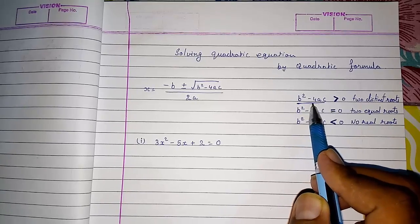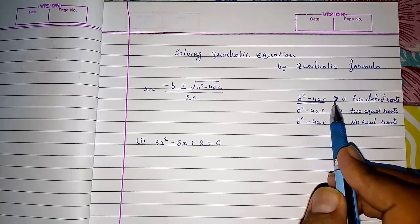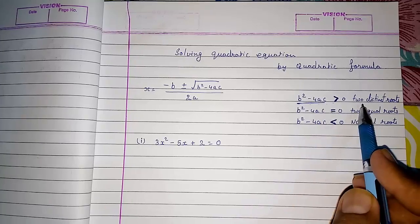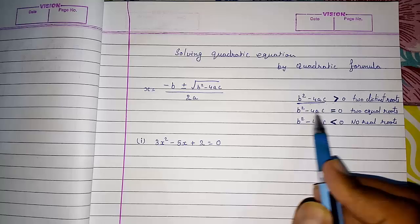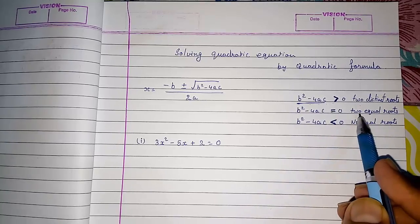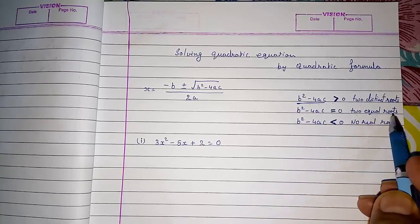So if the discriminant is greater than zero then you will get two distinct roots. If the discriminant is equal to zero means you will get two equal roots.